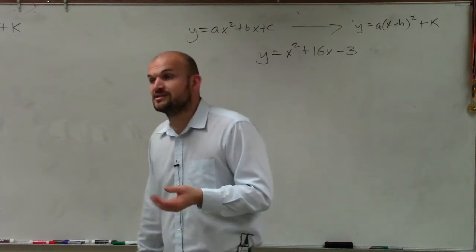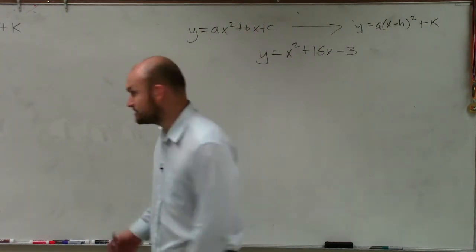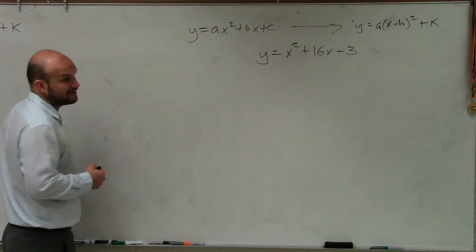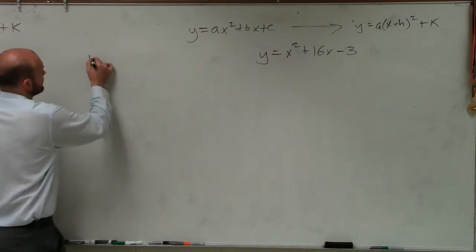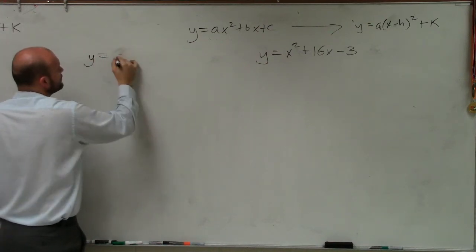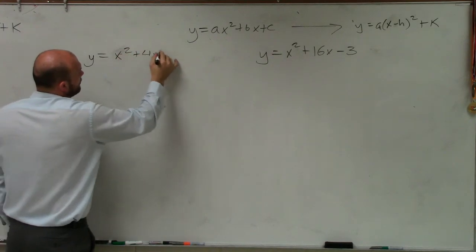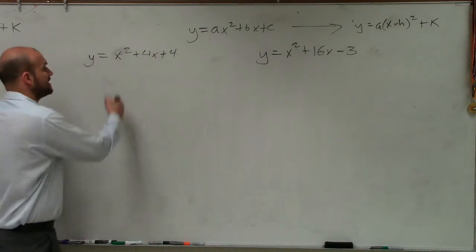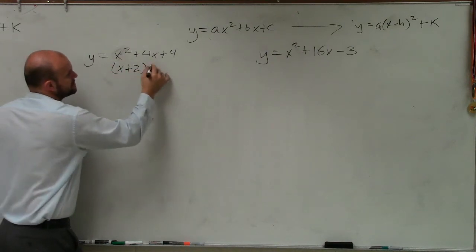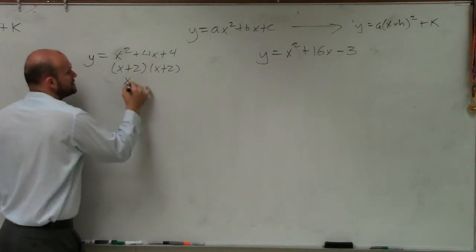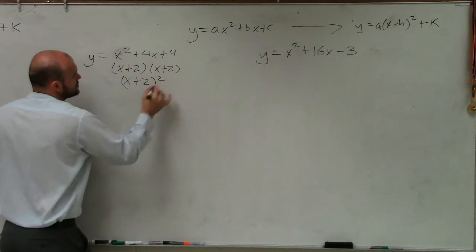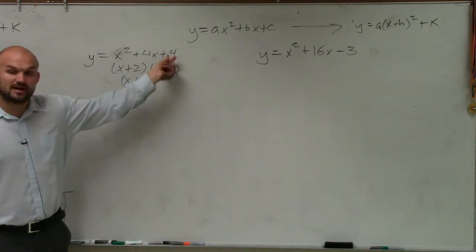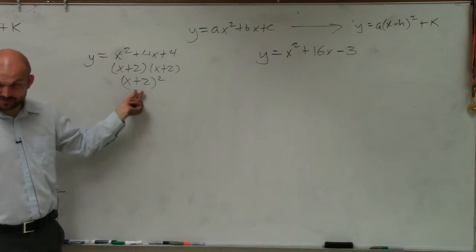Well, the way we get binomial squareds is from perfect square trinomials. So let me give you a couple examples of a perfect square trinomial. y equals x squared plus 4x plus 4. That is a perfect square trinomial. If you were to factor that into x plus 2 times x plus 2, which is x plus 2 squared. Do you guys see how that? Perfect square trinomial, binomial squared.